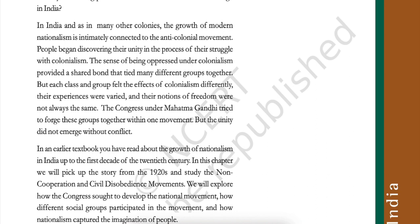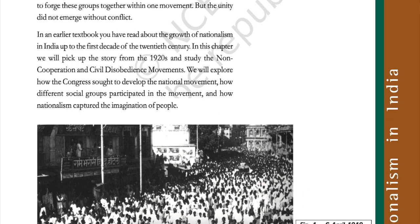People began discovering their unity in the process of their struggle with colonialism. The sense of being oppressed under colonialism provided a shared bond that tied many different groups together. But each class and group felt the effects of colonialism differently. Their experiences were varied and their notions of freedom were not always the same. The Congress under Mahatma Gandhi tried to forge these groups together within one movement, but the unity did not emerge without conflict. In this chapter, we will pick up the story from the 1920s and study the non-cooperation and civil disobedience movement, how different social groups participated, and how nationalism captured the imagination of people.